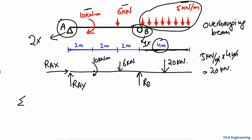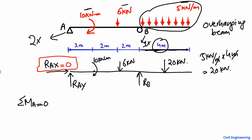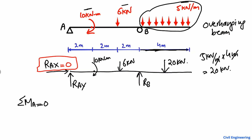Now we use the equilibrium equations. Let's take summation of moments at point A equal to zero. Note that RAx is directly equal to zero because there is no horizontal load acting on the beam. We will take clockwise moments as positive and anti-clockwise moments as negative, going from left to right. The first moment acting on the beam is the 10 kilonewton-meter internal moment, which is in the clockwise direction, so it is positive.